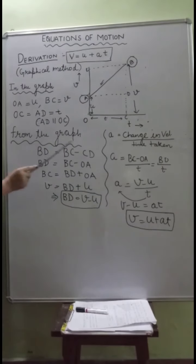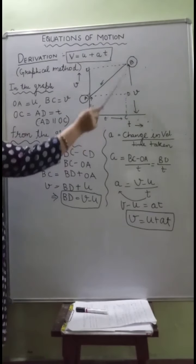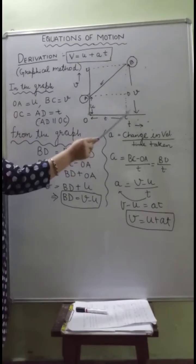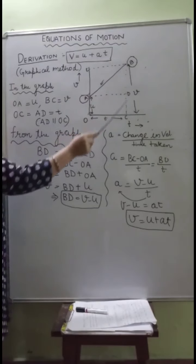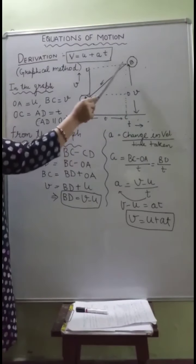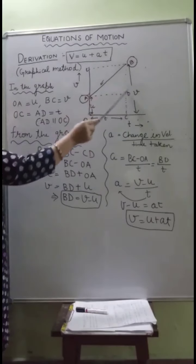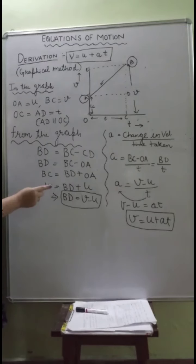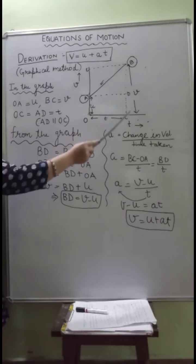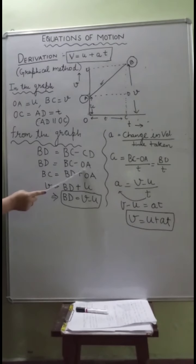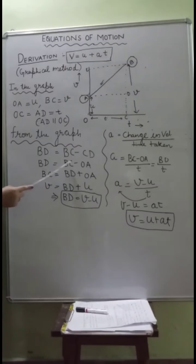From the graph, the length BD can be found by subtracting CD from the entire length BC. So BD = BC - CD. Since OADC is a rectangle, CD equals OA. So CD is replaced by OA, giving BD = BC - OA. Calculating the value of BC: it equals BD plus OA. BC is v and OA is u, so substituting these values gives BD = v - u.